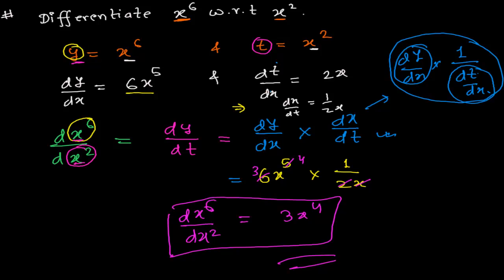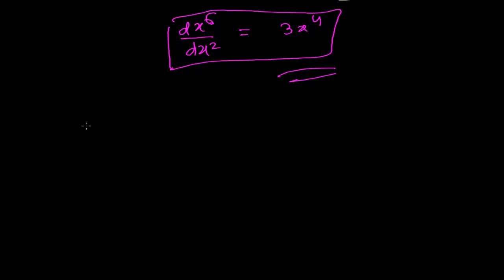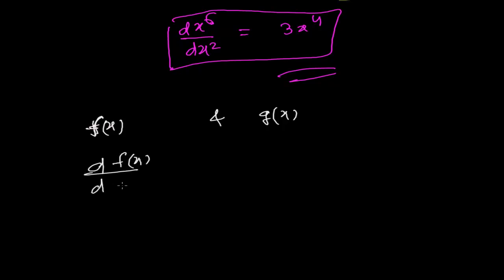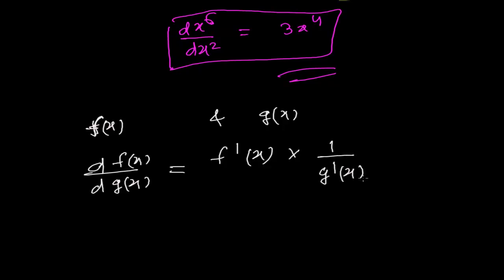To generalize: suppose you have one function f(x) and another function g(x), and you need to differentiate f(x) with respect to g(x). What you do is first write the derivative of the first function f, then divide by the derivative of the second function g. So it is simply: derivative of f(x) divided by derivative of g(x), each taken individually with respect to x.